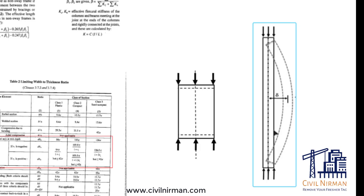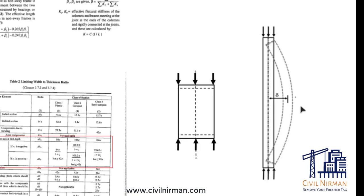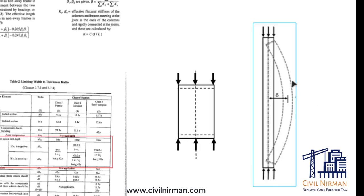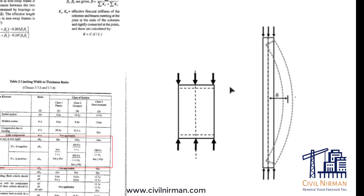For long columns, the length of the member is larger relative to its lateral dimension, giving it a higher slenderness ratio. With an increase in the length-to-radius-of-gyration ratio, the tendency to buckle increases, which reduces the overall capacity of the member.